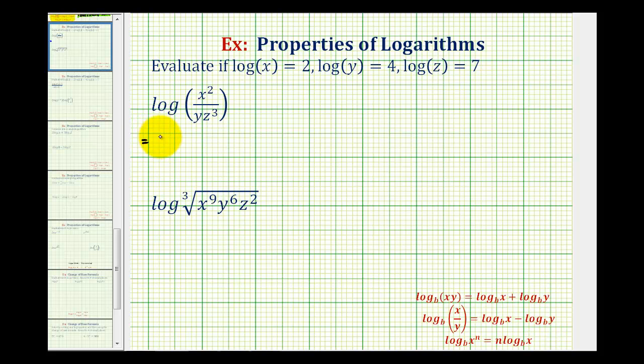This is equal to the common log of x squared minus the common log of yz to the third. Notice how we still have a product here, so now we can expand this to a sum of two logs using the product property. But we need to be careful because we're subtracting this logarithm, so we'll have to subtract the expansion of this log.